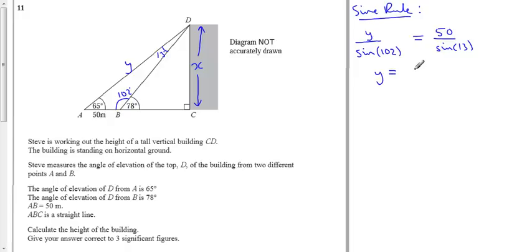So that means to define Y, I need to do 50 times sine of 102 and then divide it by sine of 13. And when I do that, I get that Y is equal to 217.413428798. Okay.